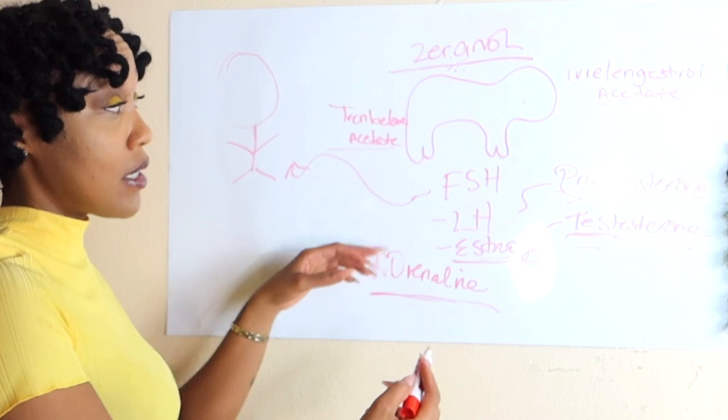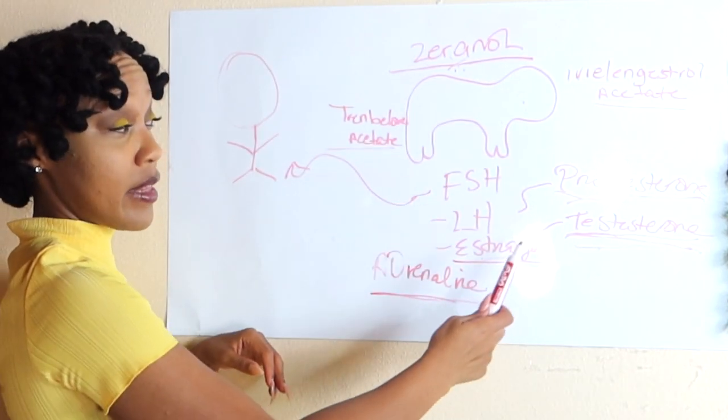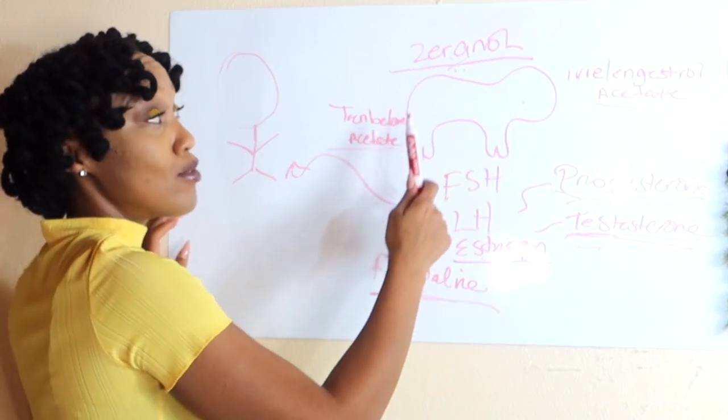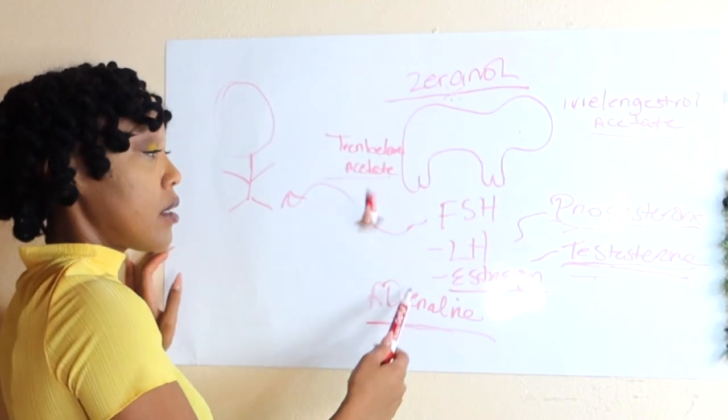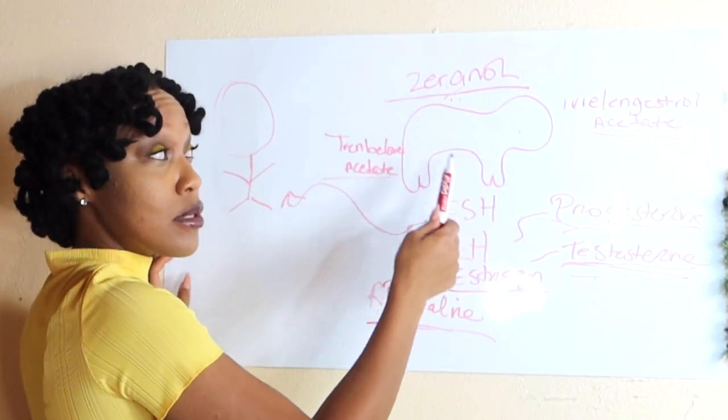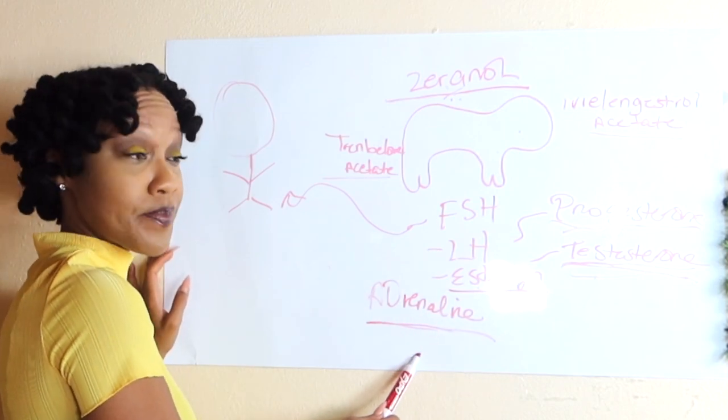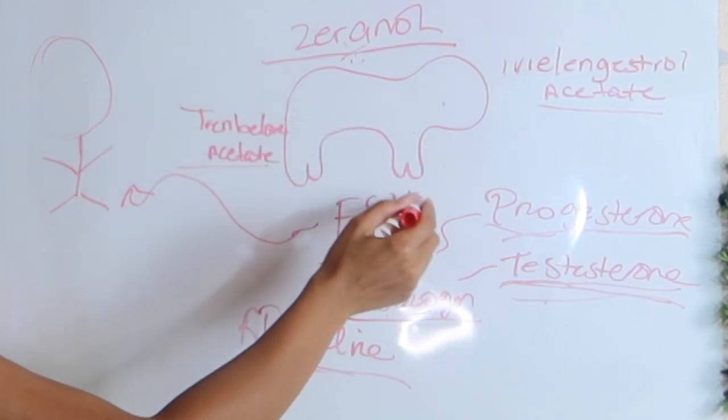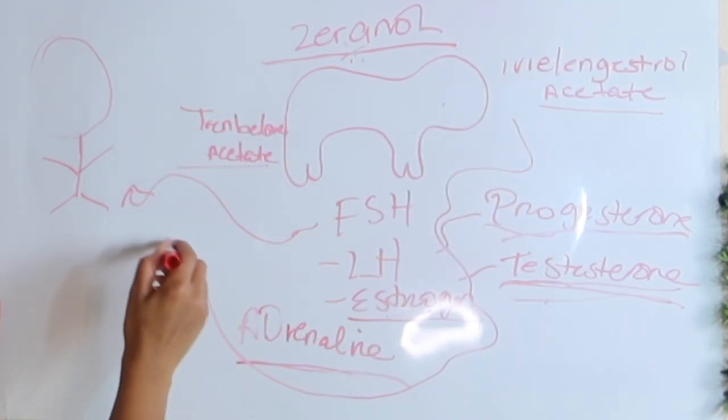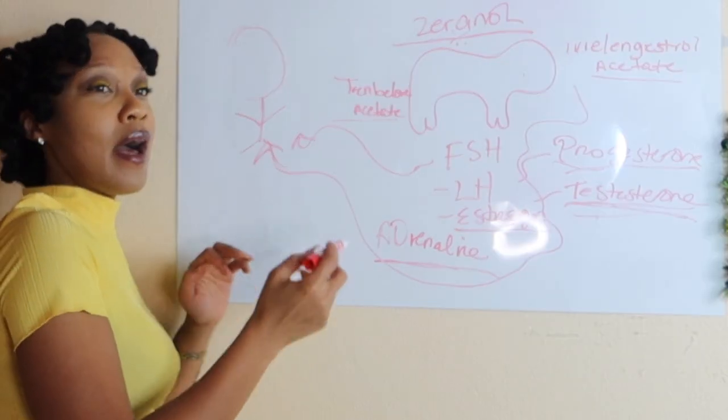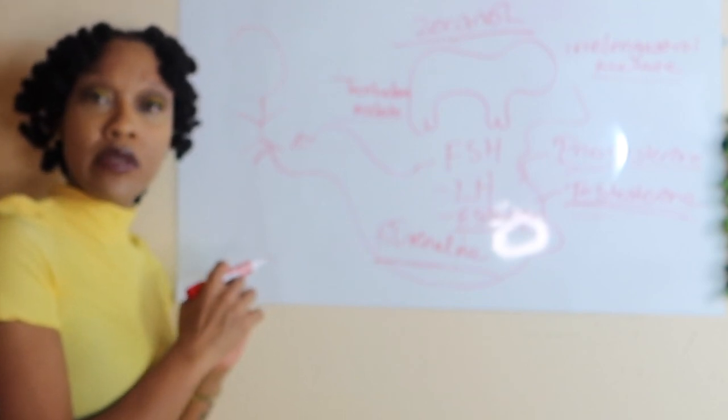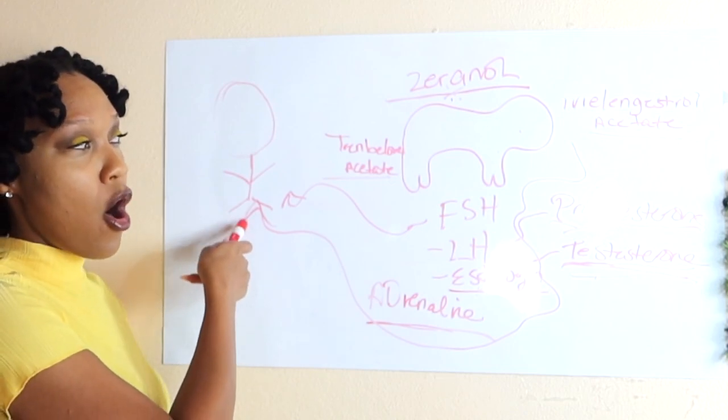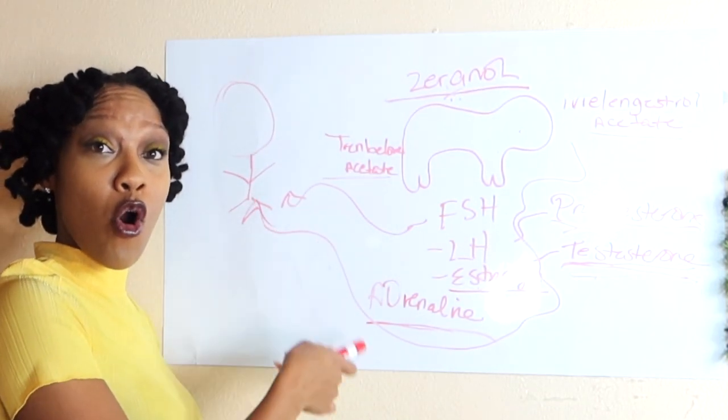So not only are you consuming the animal's naturally produced hormones, but you're also consuming the hormones injected into that animal. Not only that, before that animal dies, it produces other hormones. It produces other hormones. Then you consume that animal. And you're wondering why you have hormonal imbalance. Because as long as you're consuming hormones, you're going to always have hormonal imbalance and the side effects of hormonal imbalance.